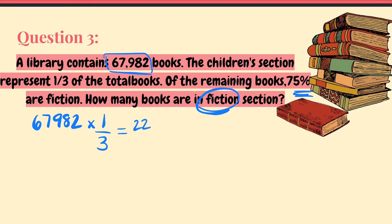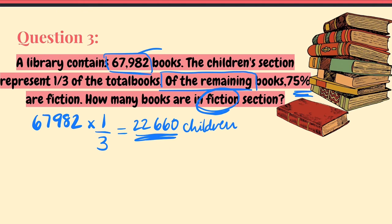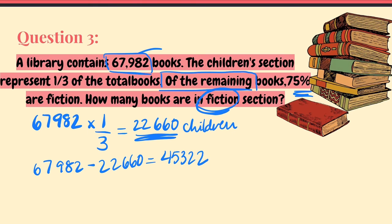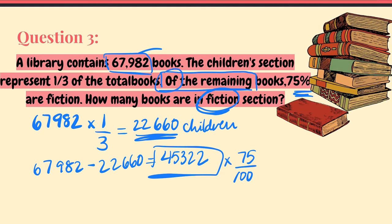But it says 'of the remaining books,' so we subtract the children's books from the total: 67,982 minus 22,660 equals 45,322 remaining books. Now, of those remaining books, 75% are fiction. Percent means divide by 100, and 'of' means multiply. So 75 divided by 100 multiplied by 45,322 — you put that in the calculator and you get 33,991 books that are fiction.